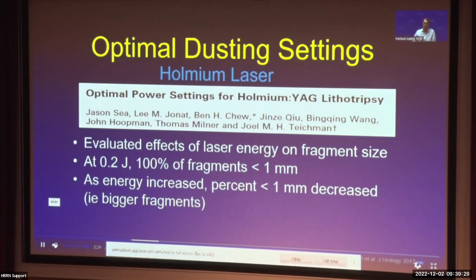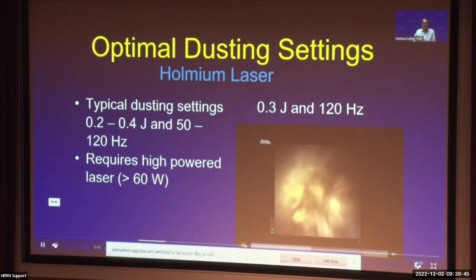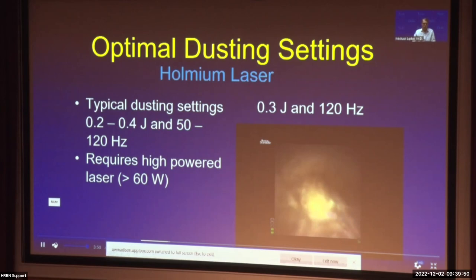For the holmium laser, the dogma is that you need low energy to create small fragments in order to effectively dust. To be efficient, we then needed to use higher frequencies. This is a video of dusting with a holmium laser at 0.3 joules and 120 hertz, which is 36 watts. Typically we use settings between 0.2 and 0.4 joules, sometimes up to 0.5 joules, and 50 to 120 hertz, requiring a high-powered holmium laser.